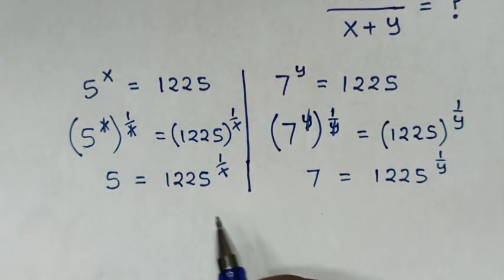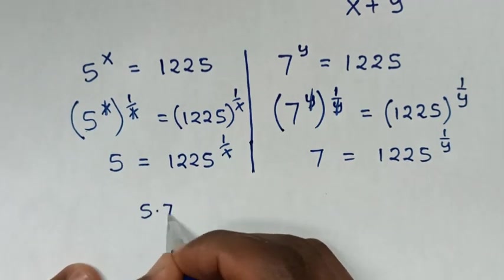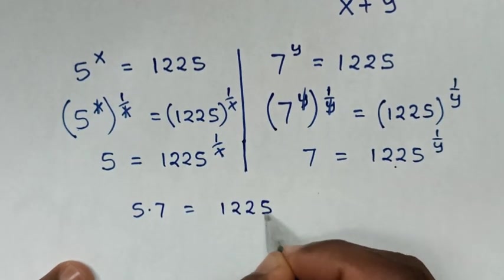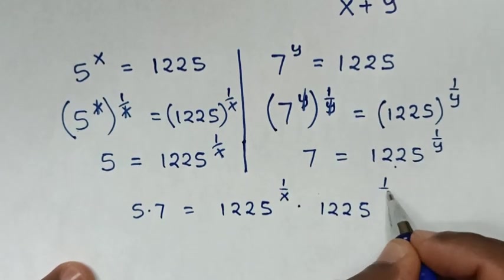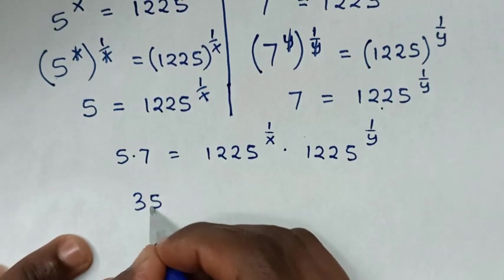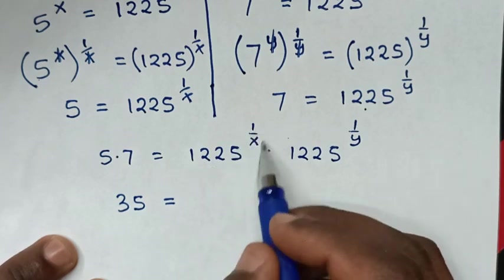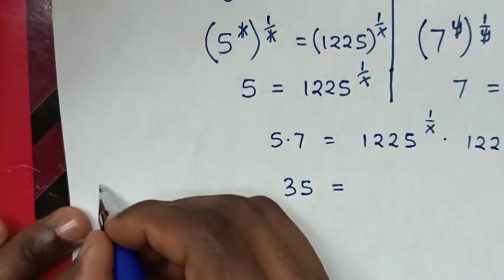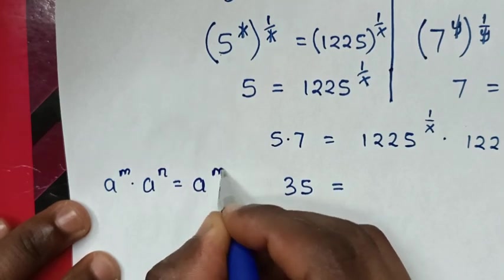In the next step, we will multiply these two equations. From the left side, 5 times 7 is equal to, on the right side, 1225 power 1 over x times 1225 power 1 over y. This is multiplication of exponents with the same base but different powers. So we will apply the exponential rule that a power m times a power n is equal to a power of m plus n.